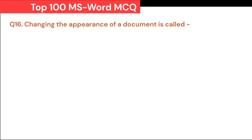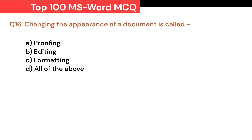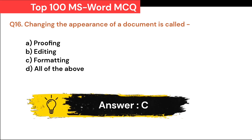Changing the appearance of a document is called: A. Proofing. B. Editing. C. Formatting. D. All of the above. Correct answer is C. Formatting.